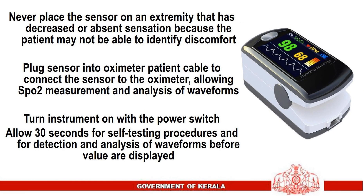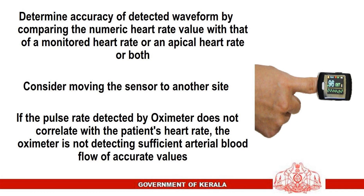Never place the sensor on an extremity that has decreased or absent sensation, because the patient may not be able to identify discomfort. Plug the sensor into the oximeter patient cable to connect it and allow SpO2 measurement. Turn the instrument on and allow 30 seconds for self-testing and detection of waveforms before values are displayed. Verify accuracy by comparing the numeric heart rate with a monitored or apical heart rate. If the pulse rate detected by the oximeter does not correlate with the patient's heart rate, the oximeter is not detecting sufficient arterial blood flow for accurate values.